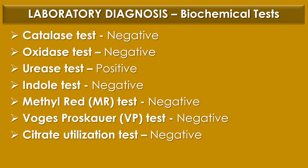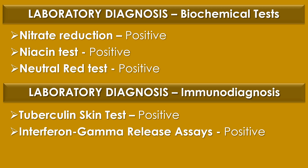Biochemical tests for Mycobacterium tuberculosis identification: Catalase test — negative; Oxidase test — negative; Urease test — positive; Indole test — negative; MR test (methyl red test) — negative; VP test (Voges-Proskauer test) — negative; Citrate utilization test — negative; Nitrate reduction — positive; Niacin test — positive; Neutral red test — positive.